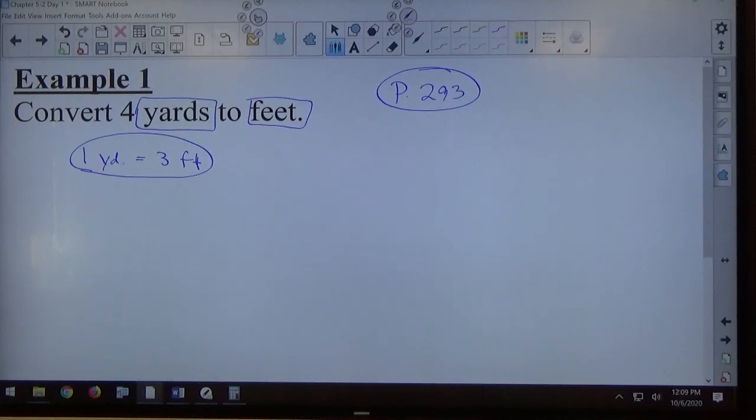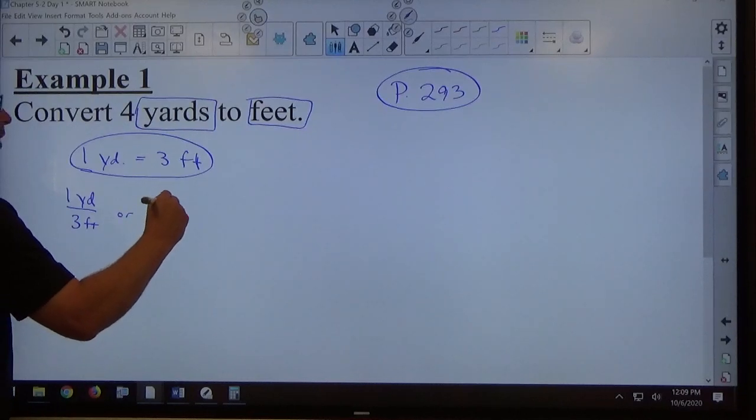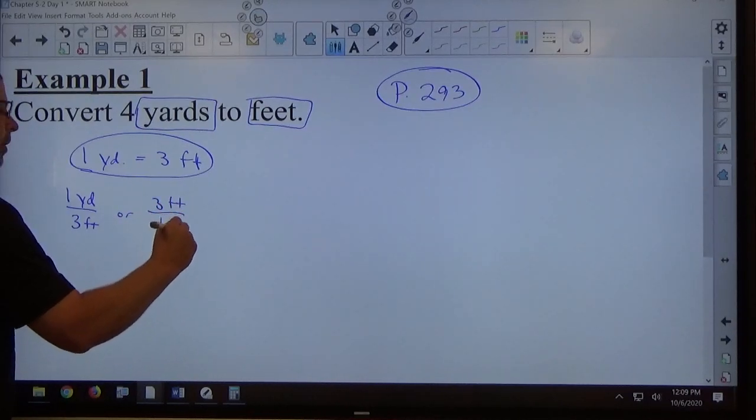So if one yard equals three feet, that gives me one of two unit multipliers. It's up to me to decide which one's more helpful. So either one yard over three feet or three feet over one yard.